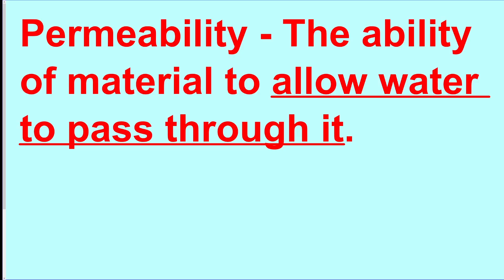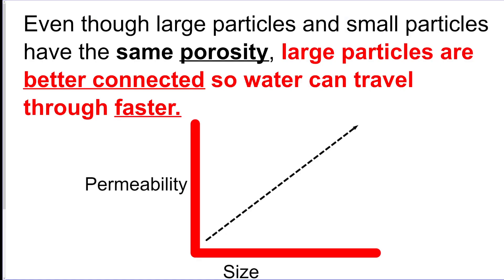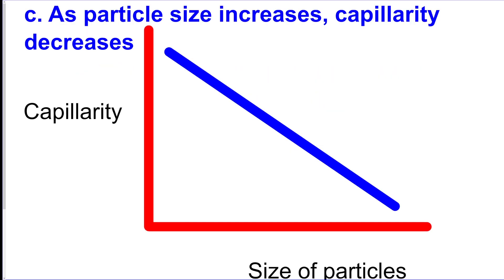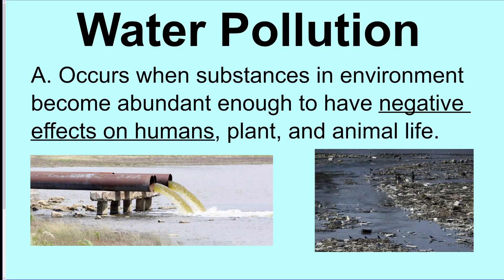Permeability is how fast water can move through sediment — permeable material allows water to pass through. Bigger particles mean bigger spaces, so better permeability. Capillary action is when water moves upward through sediment, working best with the smallest particle sizes. Regarding pollution: pollution is harmful and destroys plant and animal life.